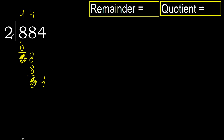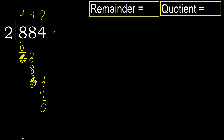Bring down 4. 2 multiplied by 2 is 4. Subtract. Next — that is not a number, therefore finish it.